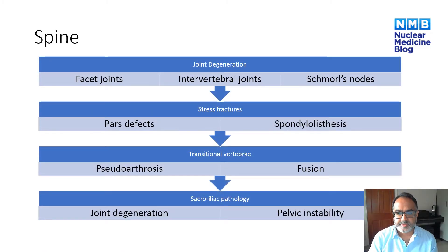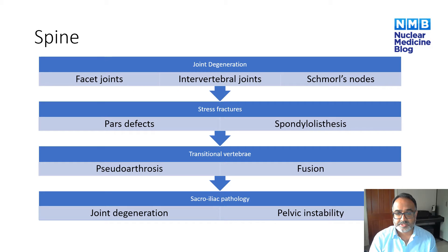When we image the spine with SPECT CT, we can look at multiple different pathologies at the same time. We can look at joint degeneration, whether that's in the facet joints or the intervertebral joints. We can identify Schmorl's nodes, look for stress fractures such as pars defects and spondylolisthesis. We can assess for transitional vertebrae, which can result in pseudoarthrosis or can be partially fused, and we can also assess the sacroiliac joints for joint degeneration and causes of pelvic instability.